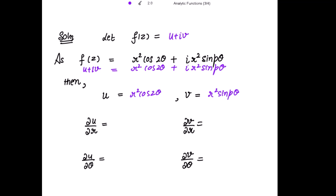Because we have to use the Cauchy-Riemann equations in polar coordinates, we find the partial derivatives of u and v. So ∂u/∂r = 2r·cos(2θ), ∂u/∂θ = −2r²sin(2θ), ∂v/∂r = 2r·sin(pθ), and ∂v/∂θ = p·r²cos(pθ).